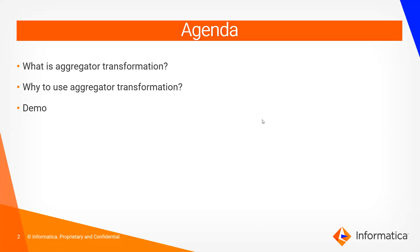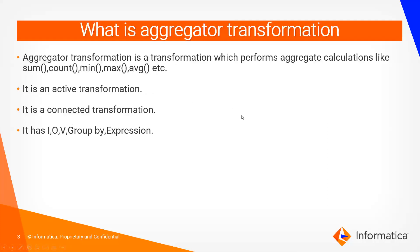What is Aggregate Transformation? Aggregate Transformation is a transformation which performs aggregate calculations like sum, count, minimum, maximum, average, etc. It is an active transformation and it is a connected transformation.